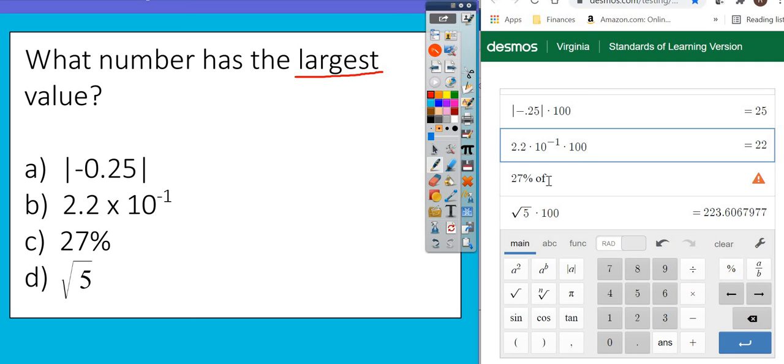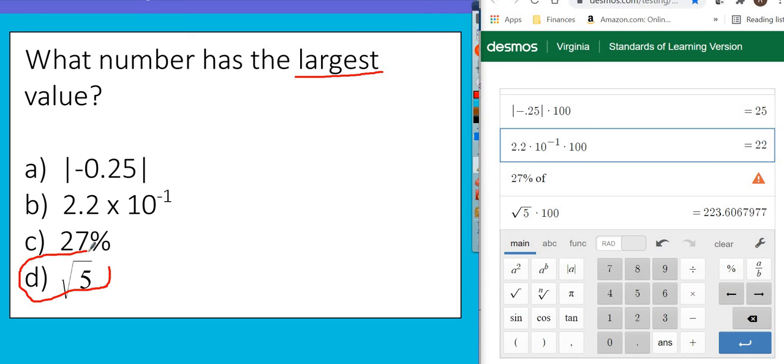The next one is 27%, so that's bigger than 25 and 22, but then we have the square root of 5 times 100 is 223.6%, or if you wanted to round to the nearest whole number, it's 224%. So, D is definitely the largest.